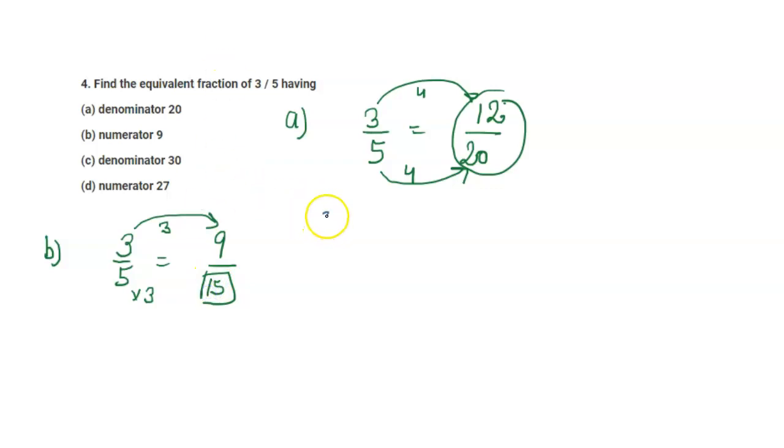Next is part C, where the denominator is 30. So 3/5 equals what numerator over 30? 5 times 6 is 30, so 3 times 6 is 18. This is your answer.